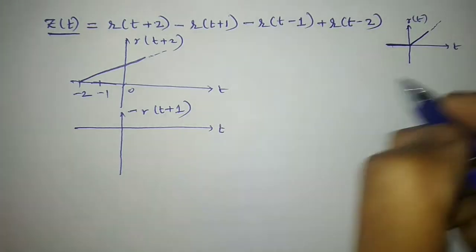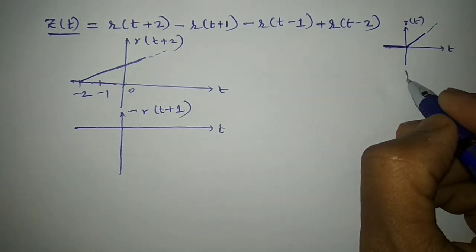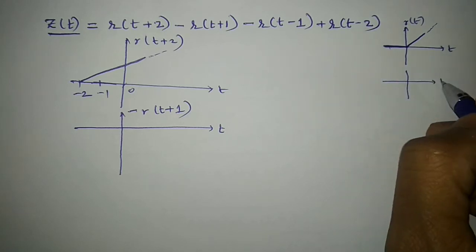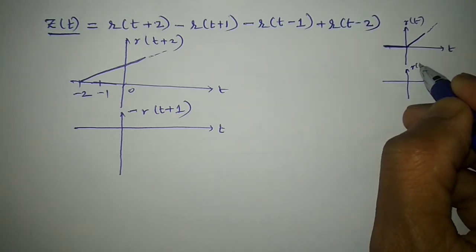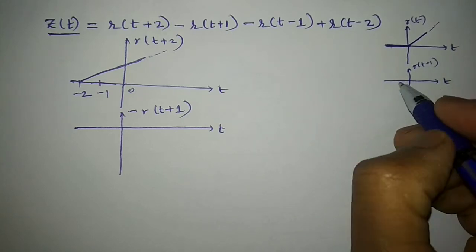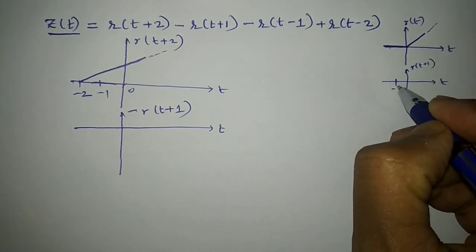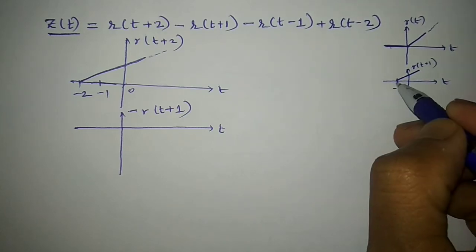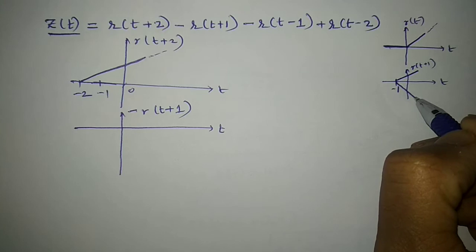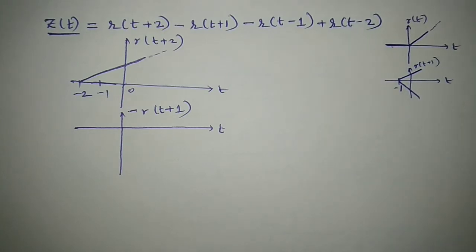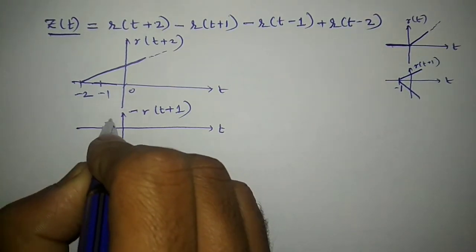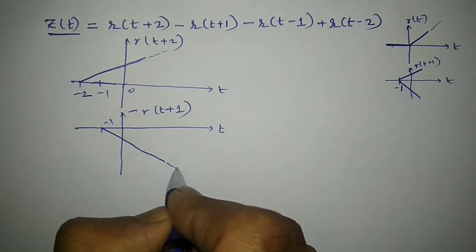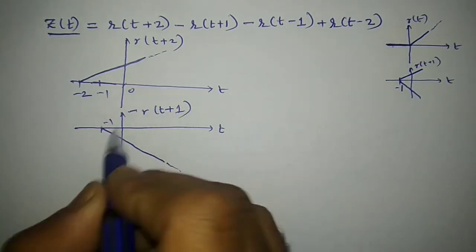First I need to sketch R(t+1). R(t+1) is the signal shifted to the left by 1. This is how that signal looks like. But for minus R(t+1), the amplitude gets reversed. So if I want to sketch that at position minus 1, this is how the signal looks like — minus R(t+1).